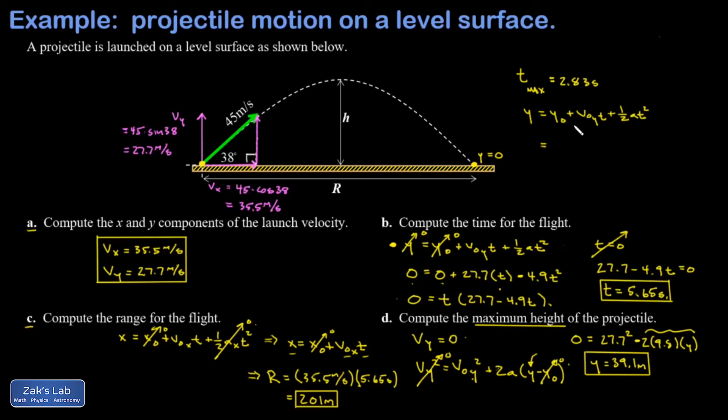Again my initial y value is zero and my acceleration is negative 9.8 meters per second squared. So I plug in v naught, that's 27.7 in the y direction, times t minus one half times 9.8 times t squared, 2.83 squared. When I run the numbers on this I get 39.1 meters, just giving us a double check on our work.